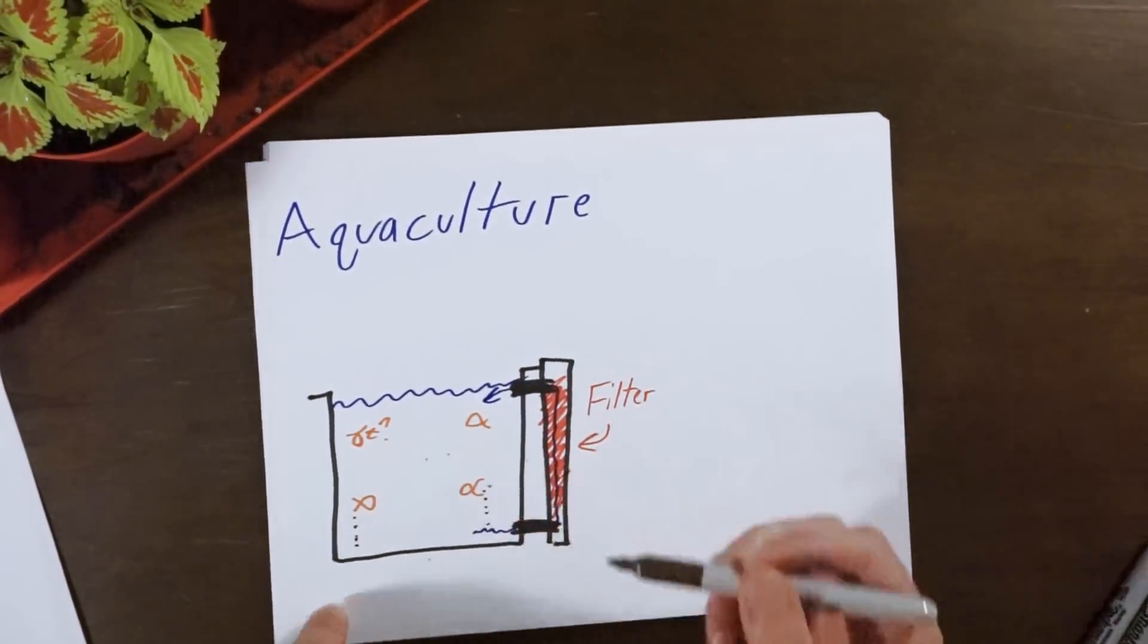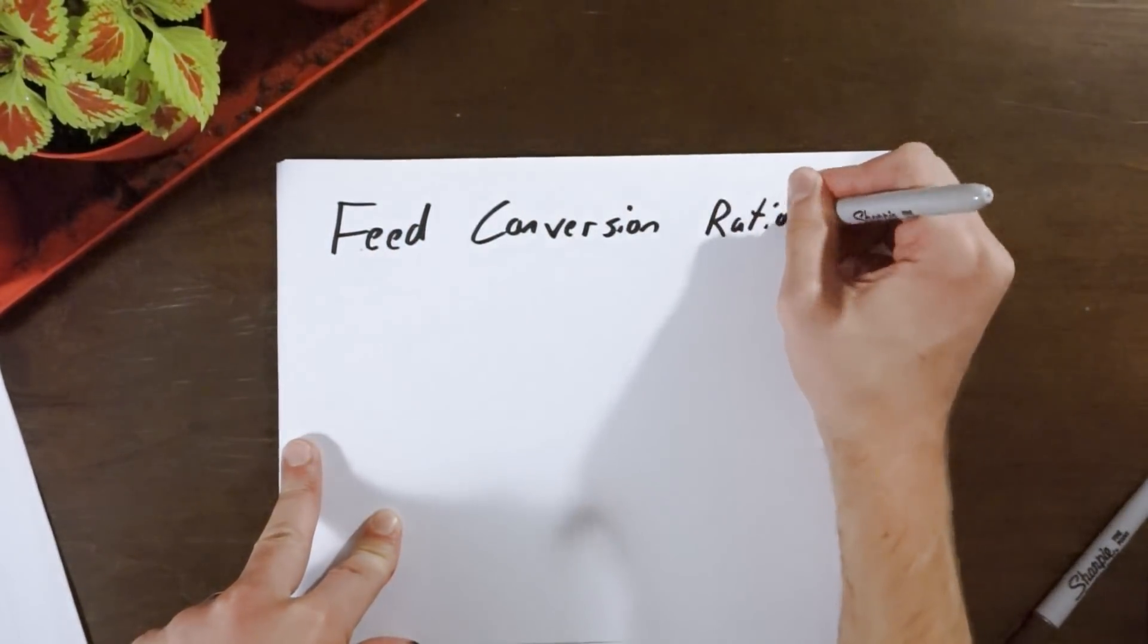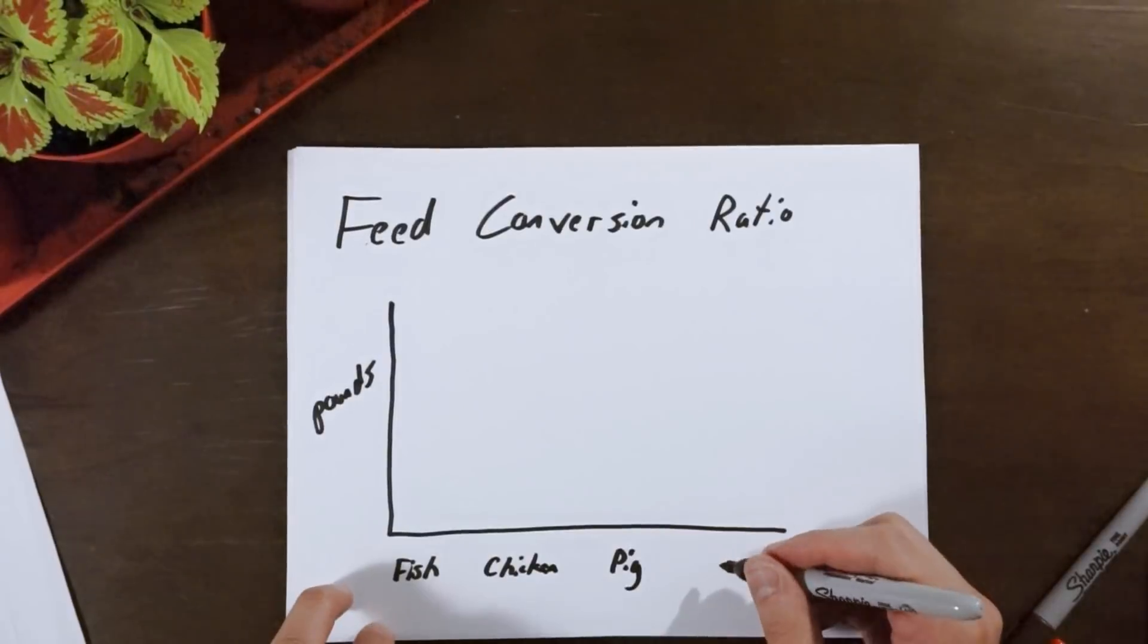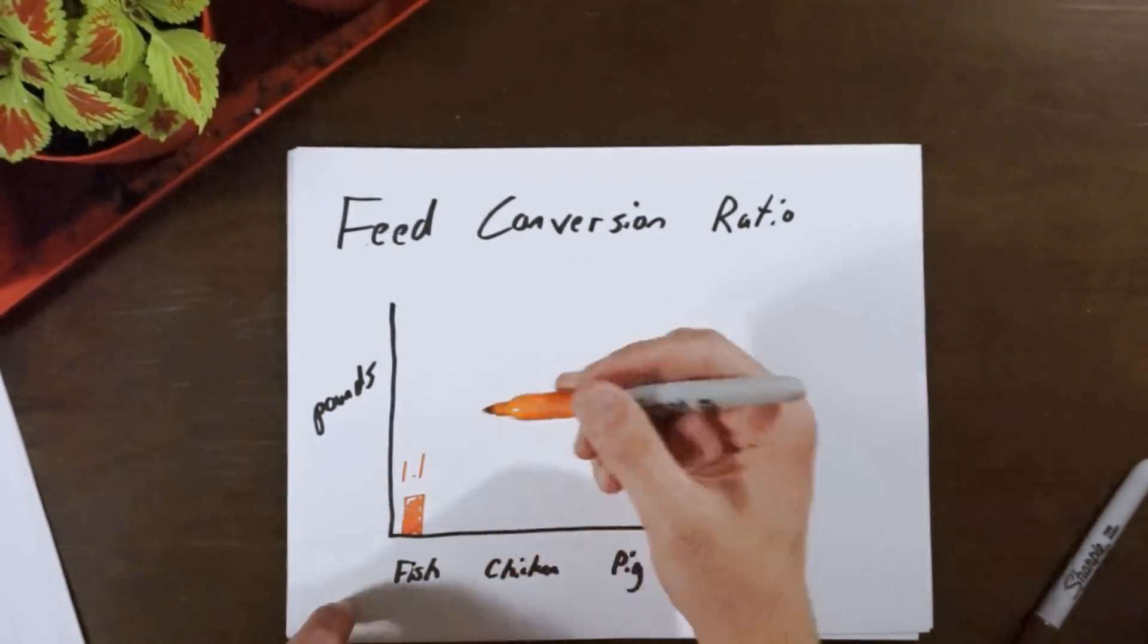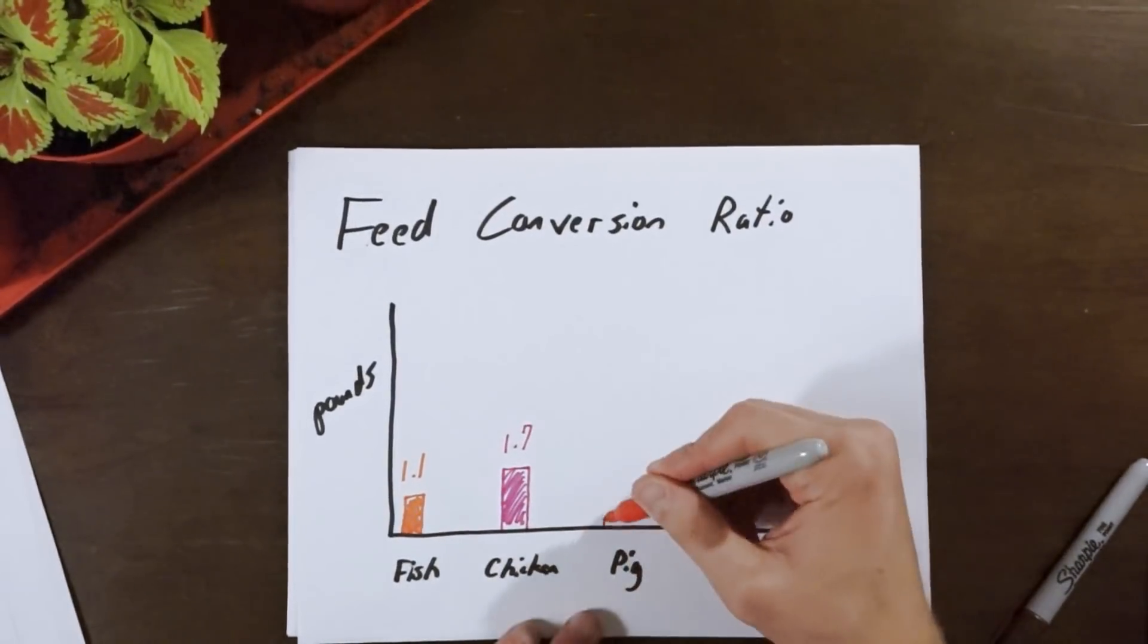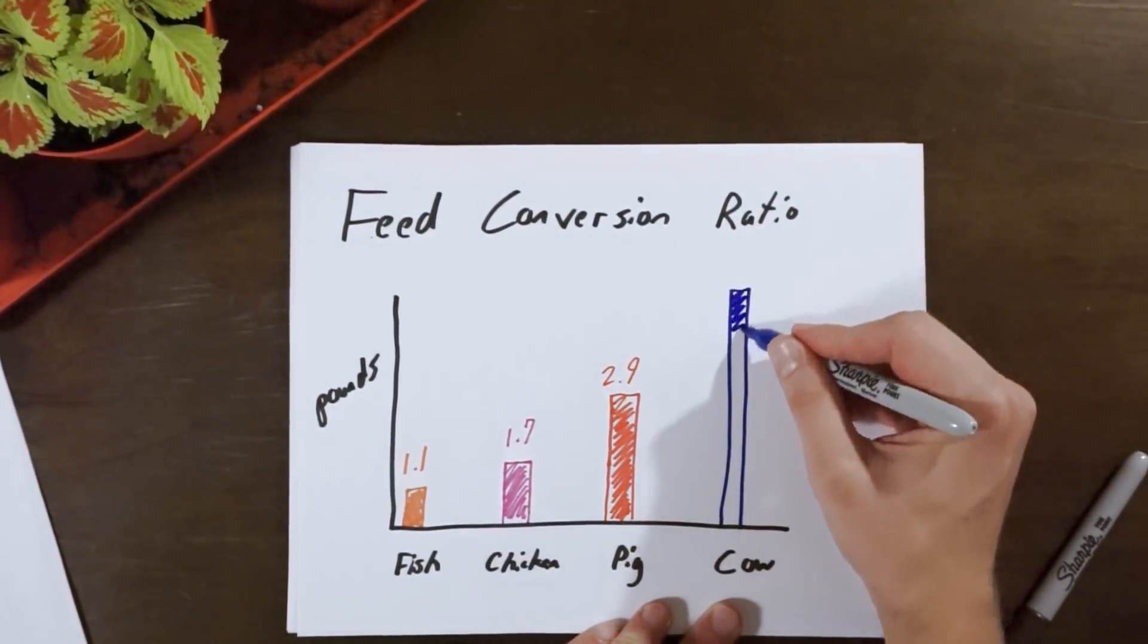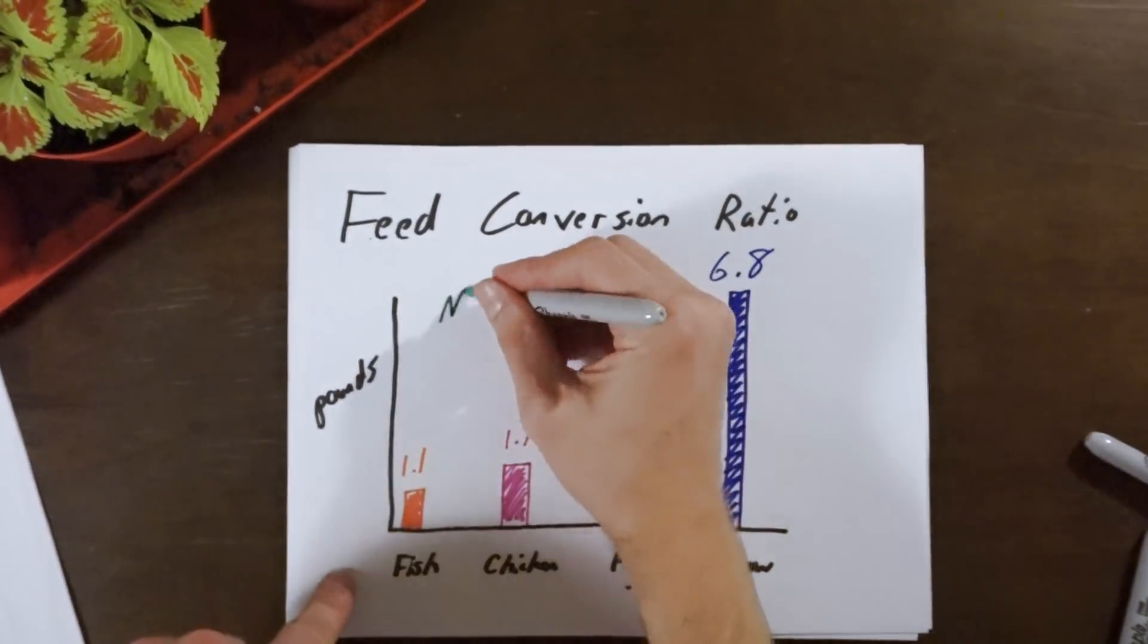The good thing about fish is that they are among the most efficient in terms of feed conversion. This chart will represent how many pounds of feed an animal has to eat to gain one pound of body mass. Fish only need 1.1 pounds of food, chickens require 1.7 pounds, pigs require 2.9 pounds, and cows require almost 7 pounds. One of the main reasons is because fish are endothermic, meaning they rely on the environment to help regulate their body heat.